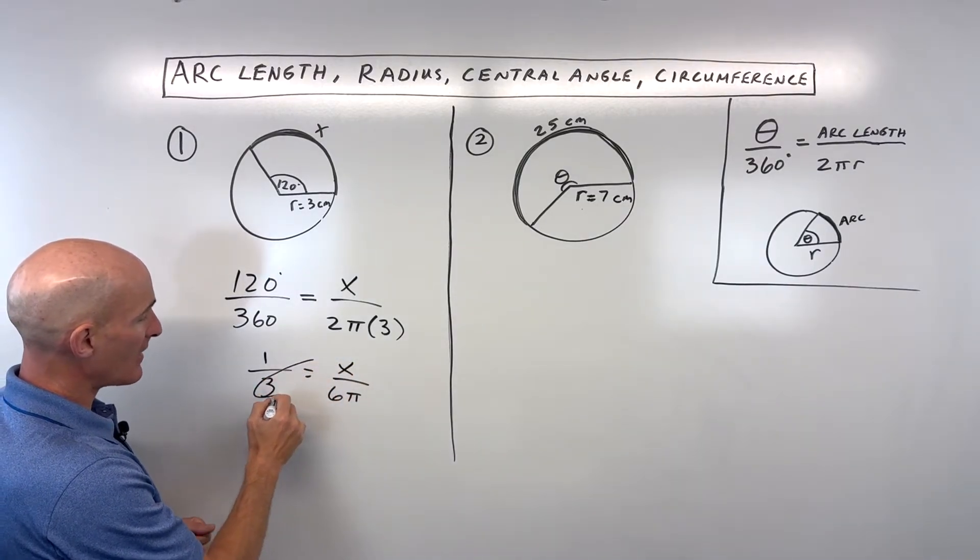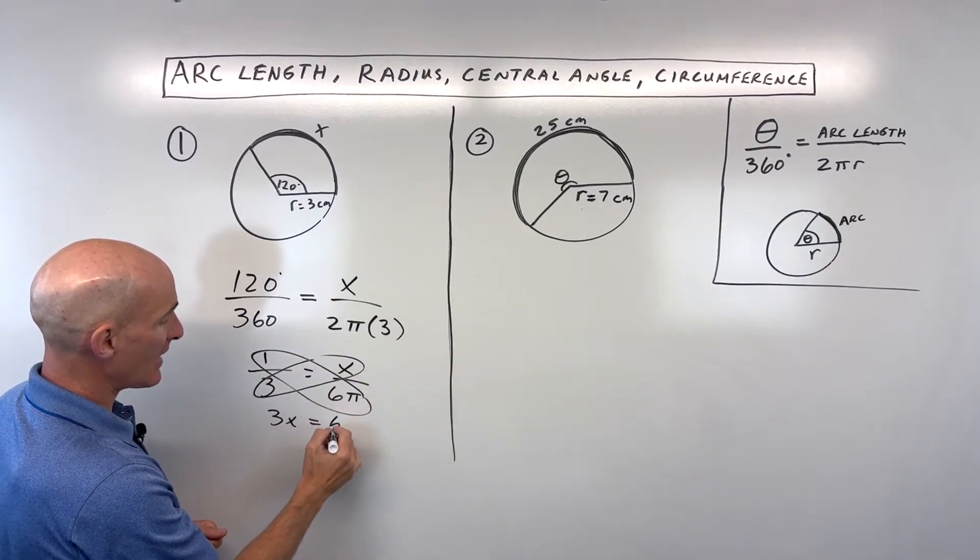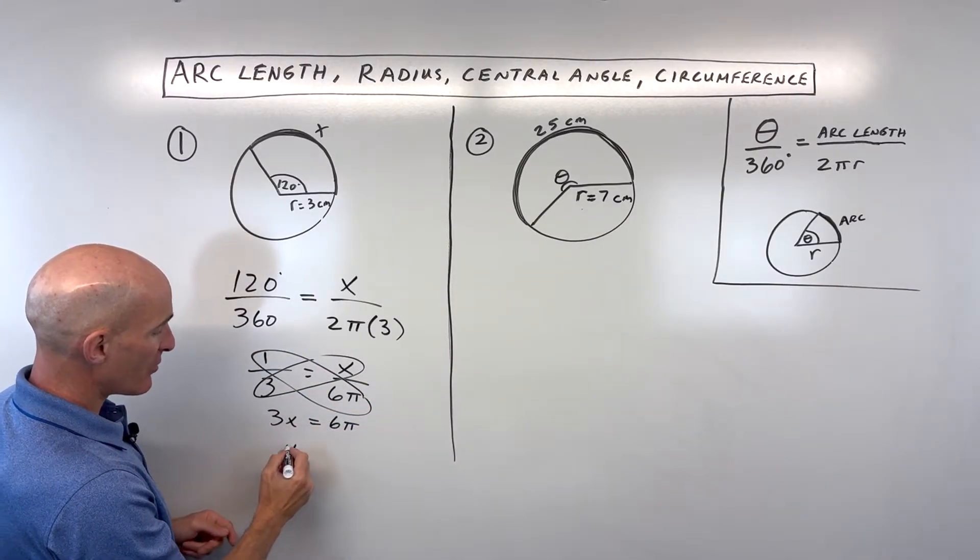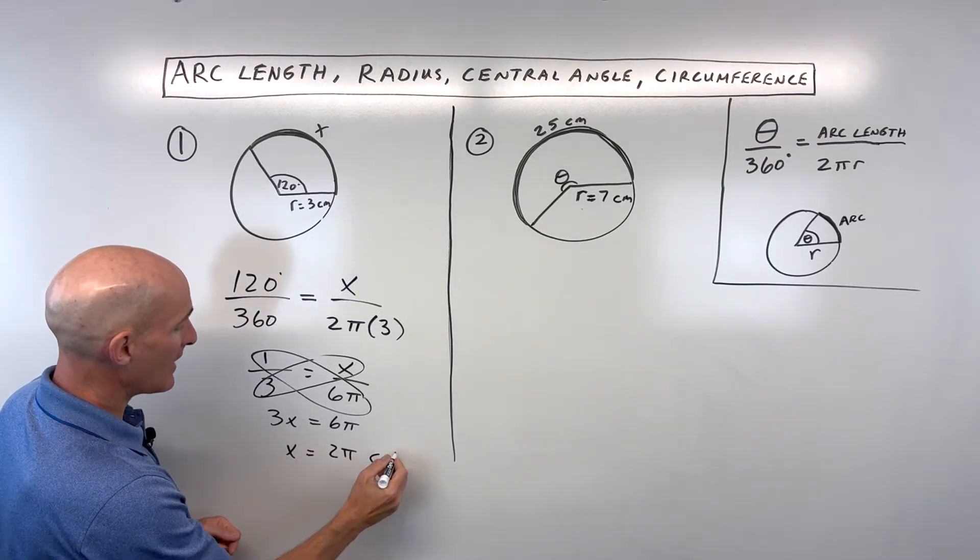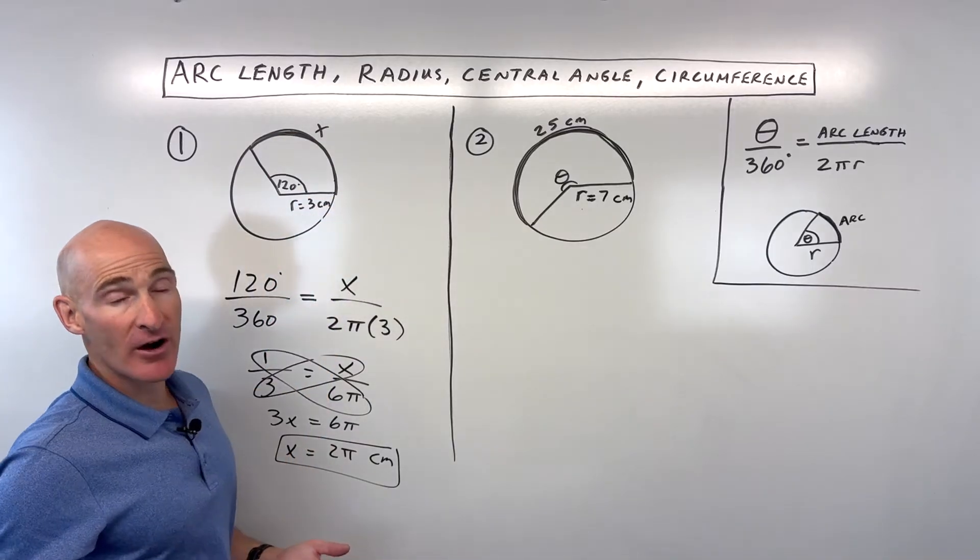I'm going to cross-multiply on the diagonal, so this is 3x equals 6π. Divide both sides by 3, and you can see x equals 2π centimeters. That's an exact answer for the arc length.